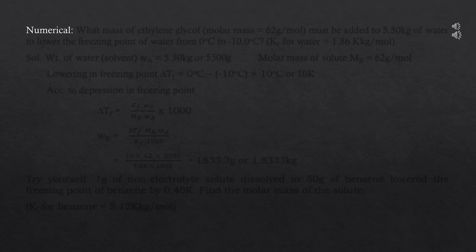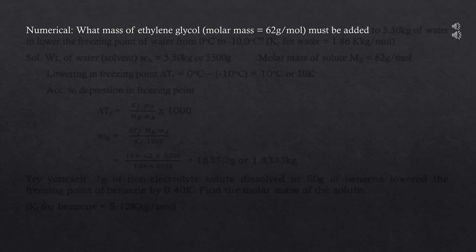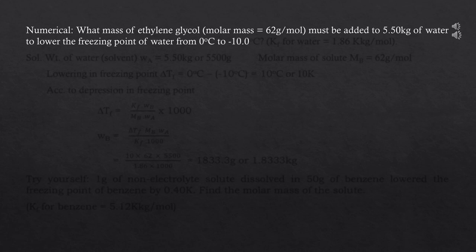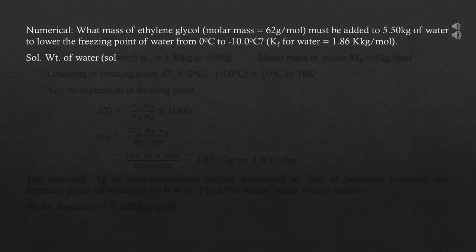Let's try a numerical problem related to depression in freezing point. What mass of ethylene glycol, whose molecular mass is 62 g/mol, must be added to 5.50 kg of water to lower the freezing point of water from 0°C to −10°C? Kf for water is given as 1.86 K·kg/mol. Let's identify the given values.